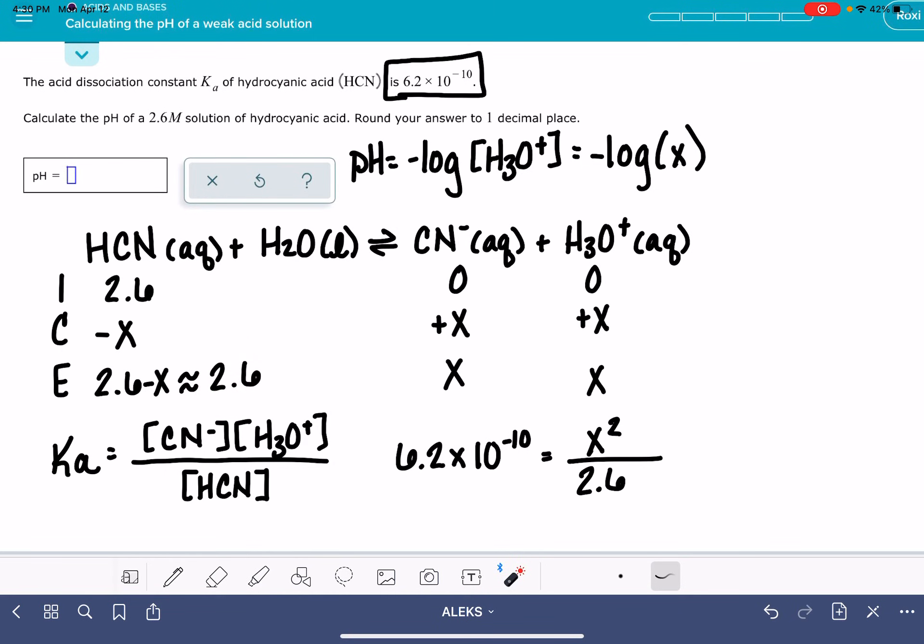Now we just need to solve for X. 6.2 times 10 to the negative 10 times 2.6. We'll take the square root of that number and I'm getting 4.01 times 10 to the minus 5. That's my X value.